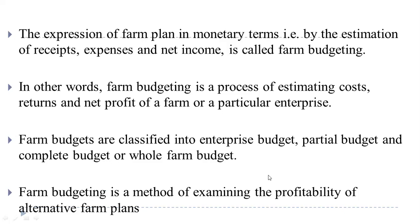In other words, farm budgeting is a process of estimating cost, returns, and net profit of a farm or a particular enterprise. Farm budgets are classified into three parts: enterprise budget, partial budget, and complete budget. Complete budget is also called whole farm budget.